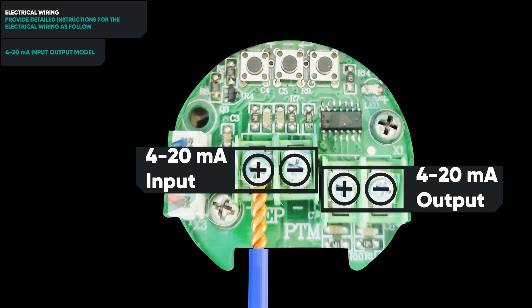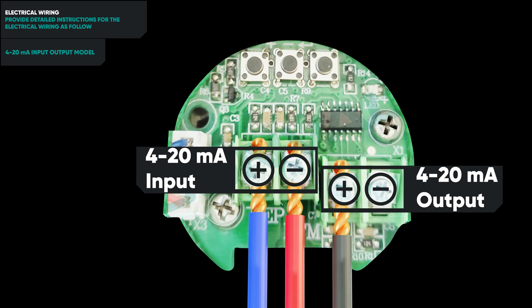Connect the necessary electrical cables to the corresponding terminals of the positioner according to the wiring diagram.